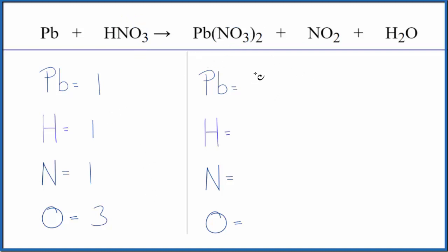Product side, one lead, two hydrogens, one nitrogen here, two times the one here. So I have three nitrogen atoms, and then the oxygens. That's some work. Two times three is six, plus two, plus one. So I have nine oxygen atoms.